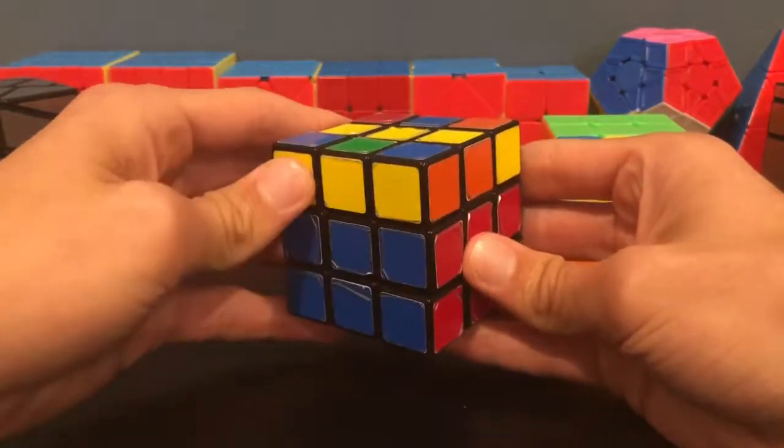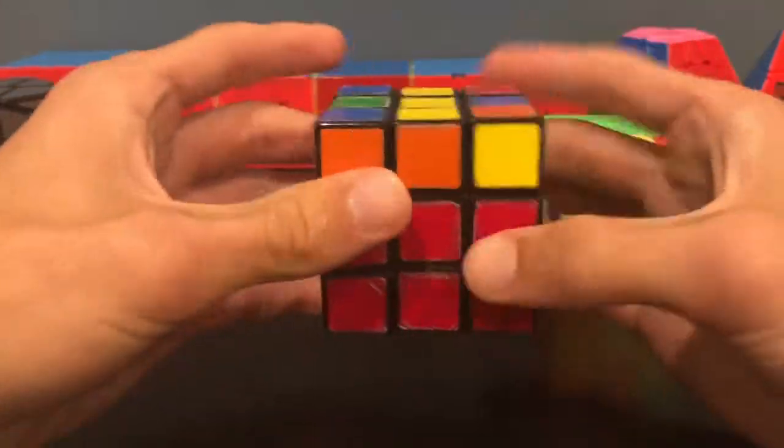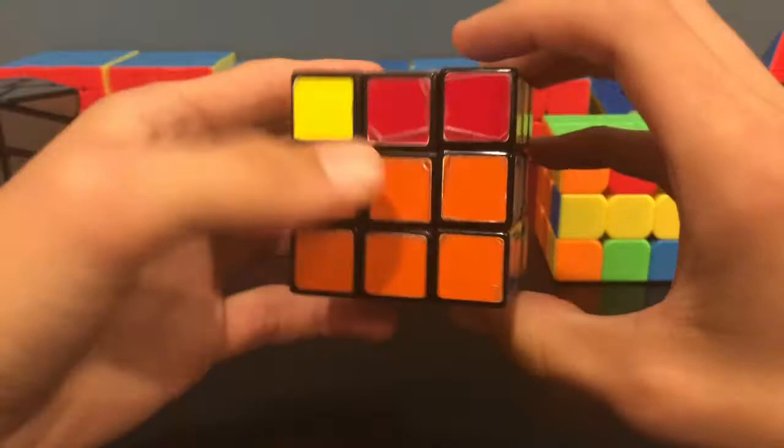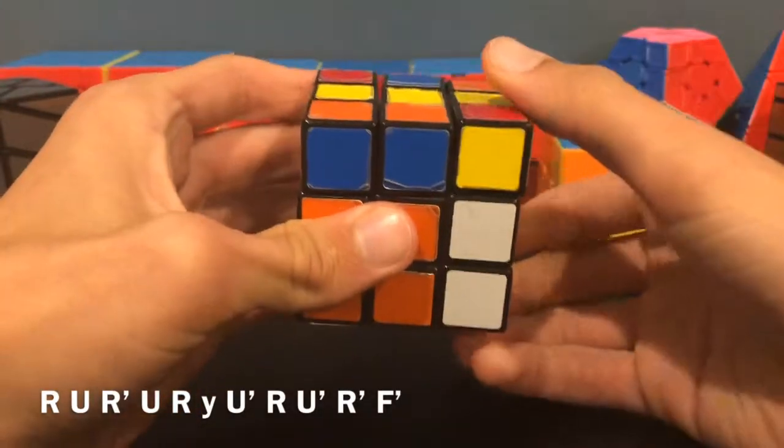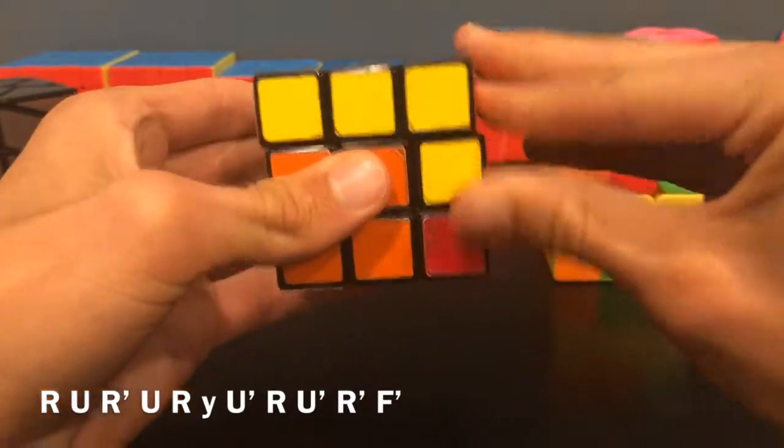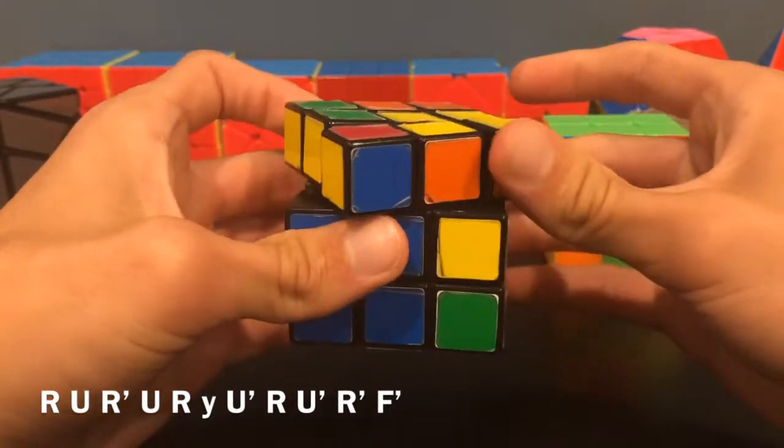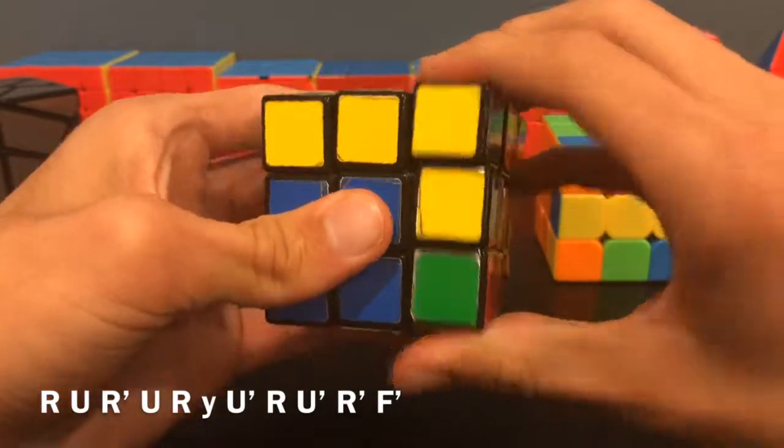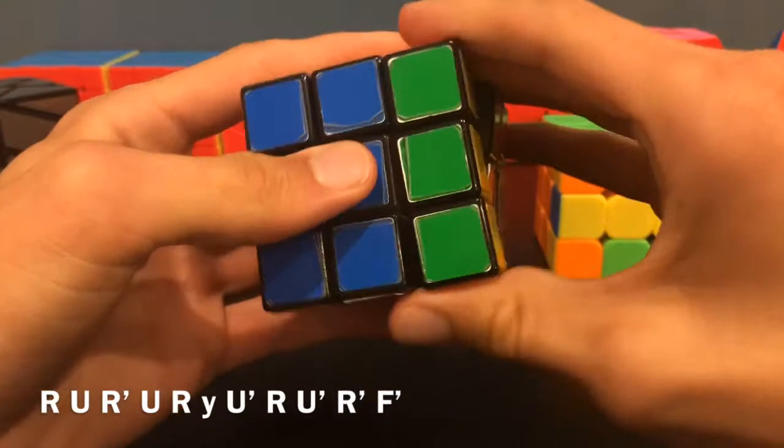This case has a bar of three as well as this broken bar with blinkers. So hold the broken bar here and then do this algorithm: R U R' U R, then Y, R' U' R' U' R' F R F'.